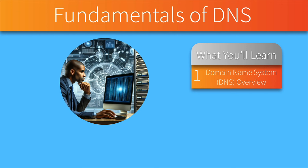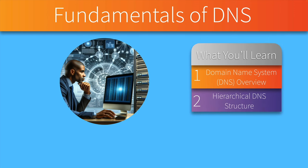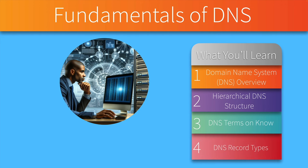We'll begin with an overview of DNS and then discuss how it's structured hierarchically. When working with DNS, there are several different terms that we need to understand, and we're going to spend some time getting to know these DNS terms, and then identify various DNS record types, like an A record used to specify the IPv4 address of a known domain name, or an AAAA record used to specify an IPv6 address corresponding to a specific domain name.